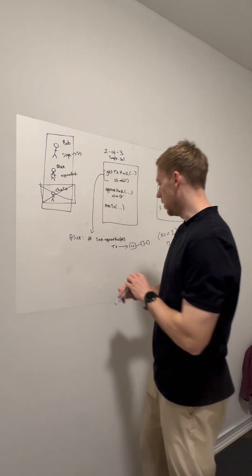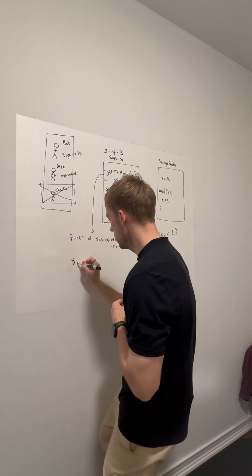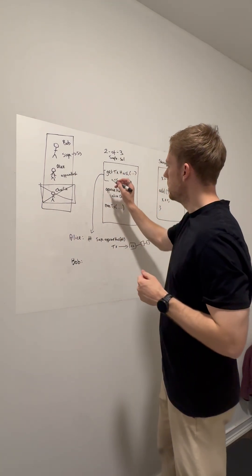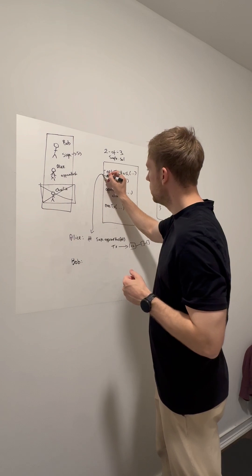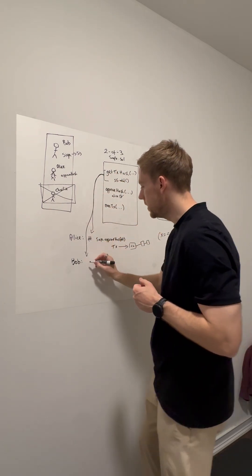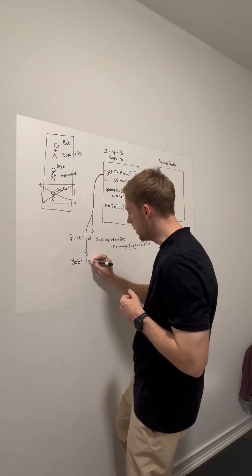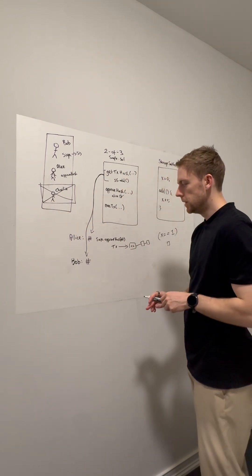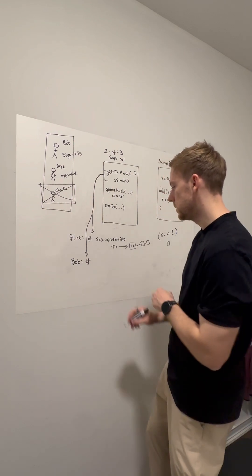Next is Bob. Bob says he wants to sign. It's actually a similar situation. Bob also wants to get the hash. Remember, this is representative of the call data to the storage setter. Bob gets the hash,